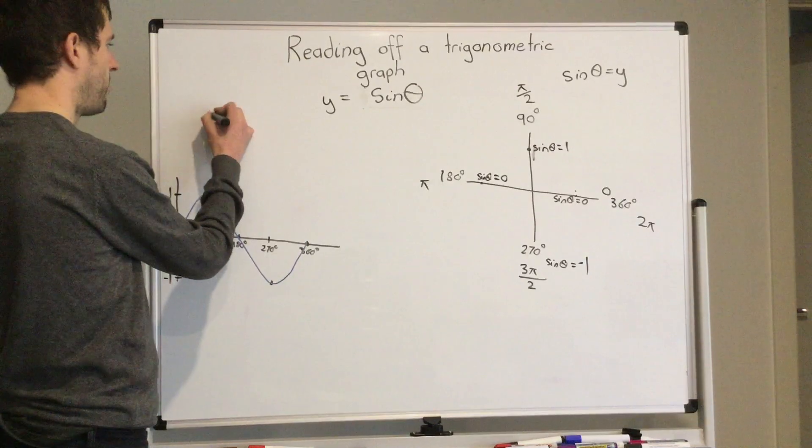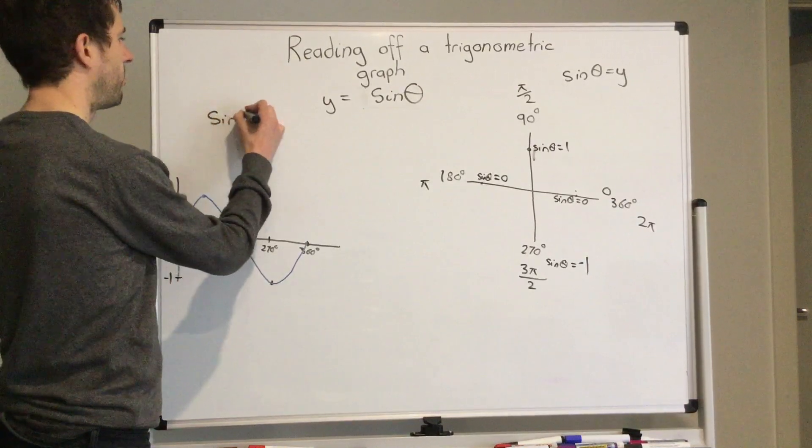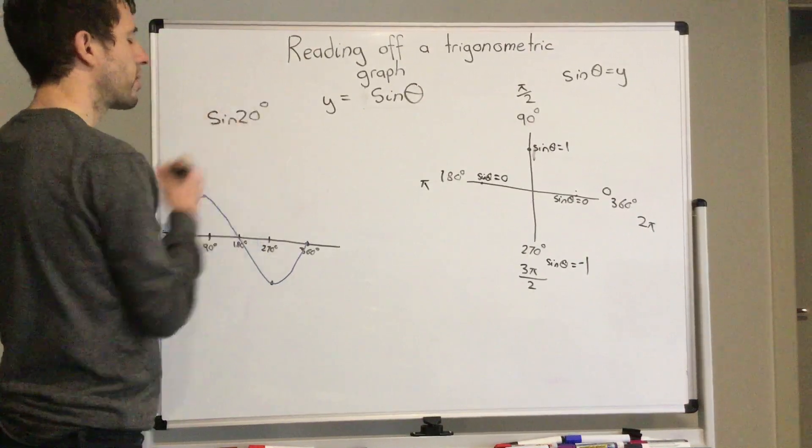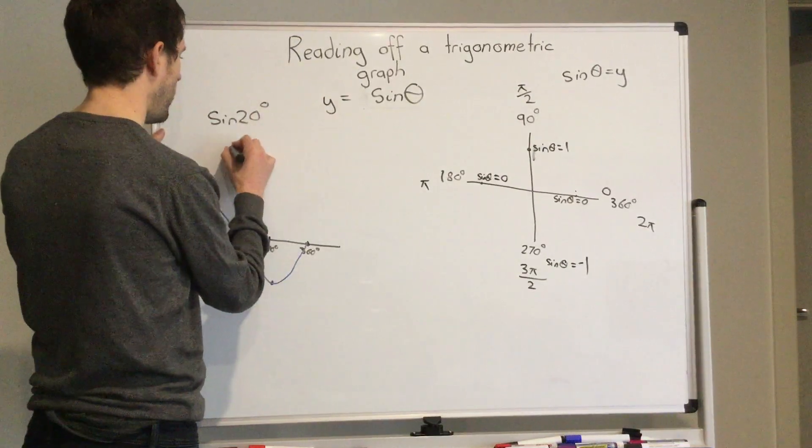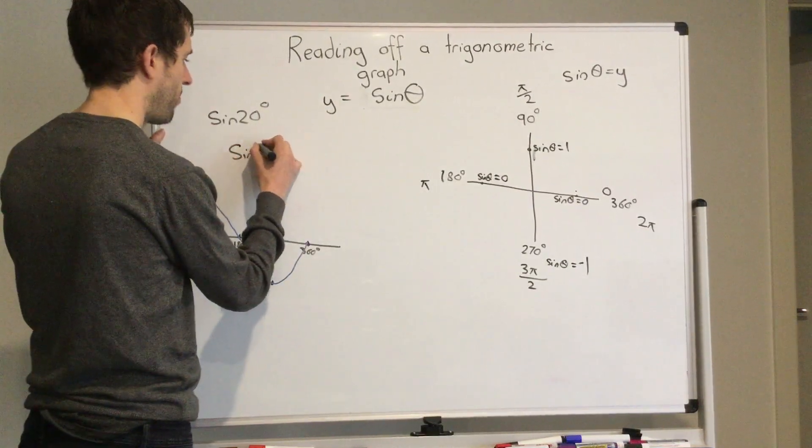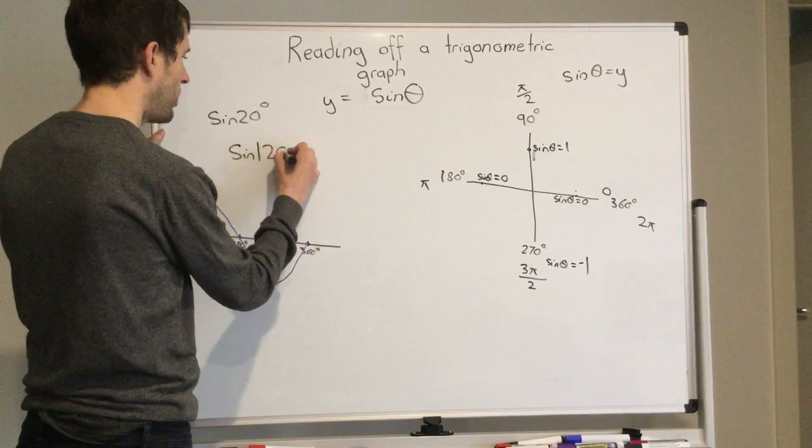If I have sine 20 degrees and sine 120 degrees, well, sine 20 degrees would be here.